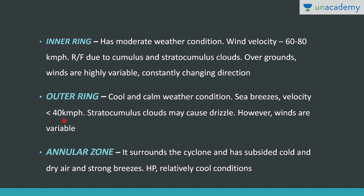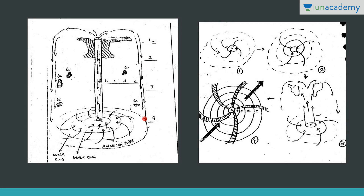In the outer ring, velocity is less than 40 km per hour, compared to 60 to 80 km per hour in the inner ring. Stratocumulus clouds may cause drizzle here, whereas in the inner ring there was rainfall, and in the eye wall there was thunder and lightning. The last zone is the annular zone, which surrounds the cyclone as the peripheral zone where subsiding cold and dry winds prevail. So the structure from center outward is: eye, eye wall, inner ring, outer ring, and annular zone.